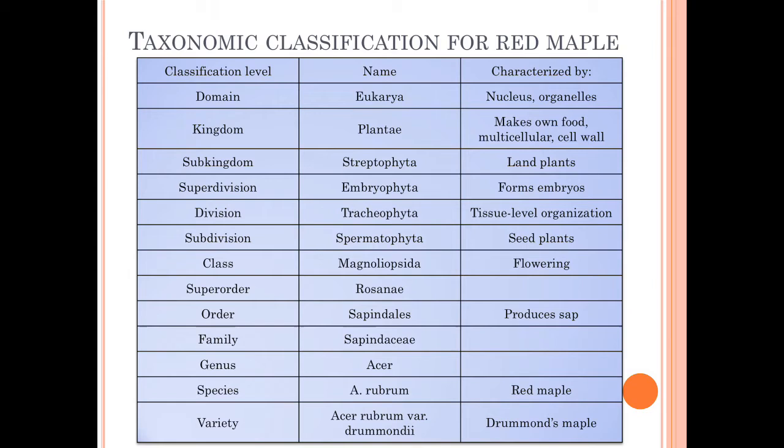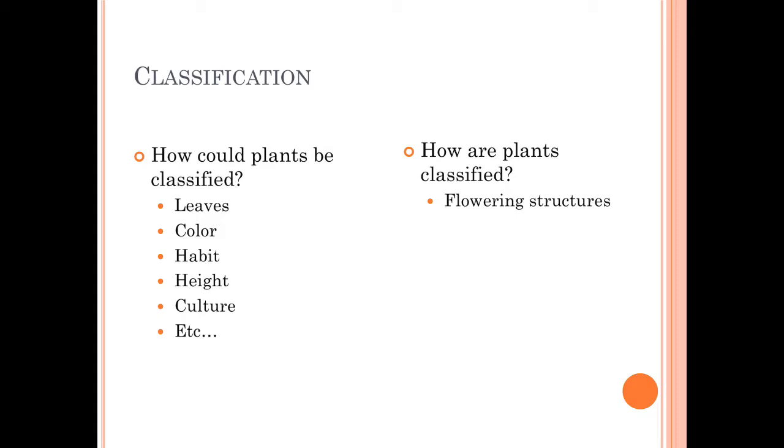Don't write this down. This is the taxonomic classification for red maples. And you can look at all of the different living organisms can fall into this type of classification. What we're going to work with most of the time is right down here. Occasionally, we'll work with varieties or cultivars. But most of the time, what we're going to be looking at is family, genus, and then the species.